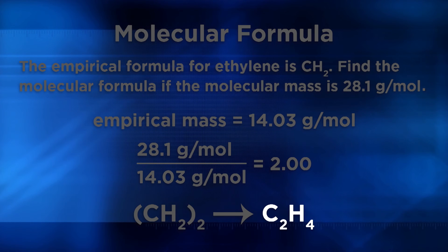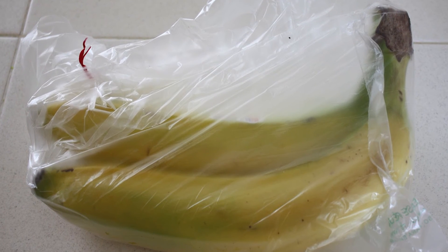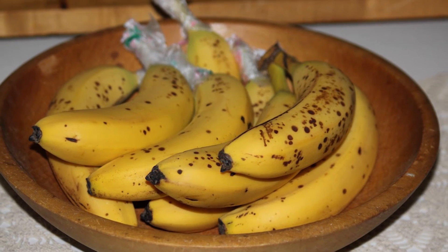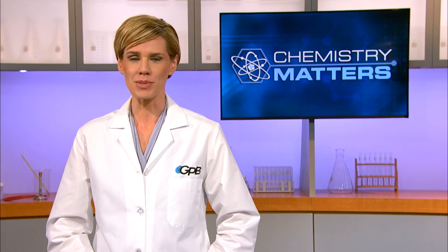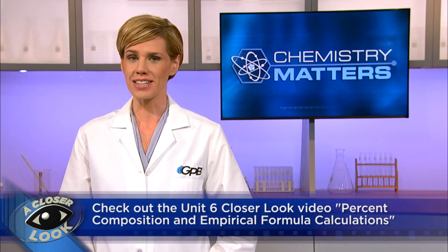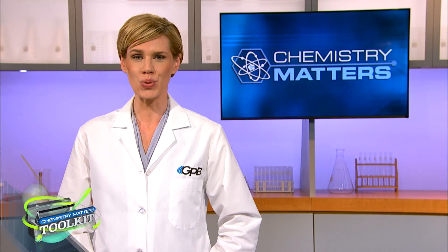This compound is known as ethene, also called ethylene gas. Ethylene is a colorless gas produced by ripening fruit. If you place ripening bananas in a plastic bag and trap the ethylene gas, you'll find that the bananas ripen much faster. And now you've calculated the correct molecular formula for ethylene gas. If you'd like more practice with these concepts and calculations, you can check out our Closer Look video on percent composition and empirical formula calculations, and find practice problems in our Chemistry Matters Toolkit.